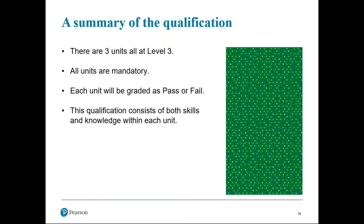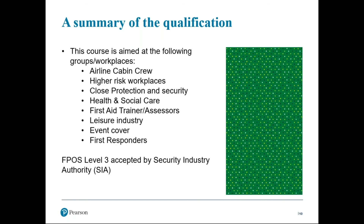There are three units at Level 3. All units are mandatory. Each unit will be graded as a pass or a fail, and the qualification consists of both skills and knowledge within each unit. The Level 3 FBOSS course is aimed at the following work groups: airline cabin crew, higher risk workplaces that need a little bit more than first aid at work, close protection and security, health and social care, first aid trainer assessors, the leisure industry, event cover, and first responders. The Level 3 FBOSS is accepted by the Security Industry Authority.